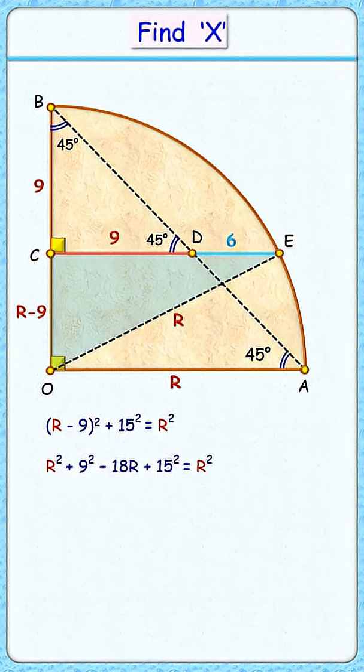Let's open the bracket on the left-hand side. Solving this equation, R squared will get cancelled on both sides and we are left with 18R is 306. Solving it, R will be 306 divided by 18, or 17 centimeters, and that's our answer.